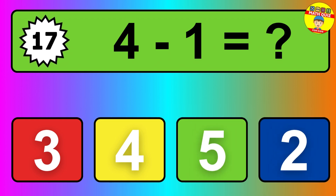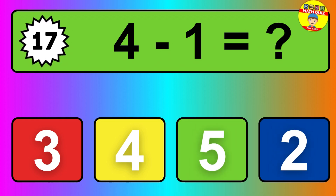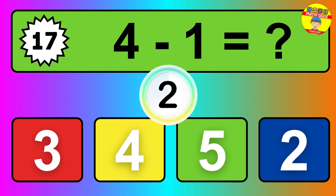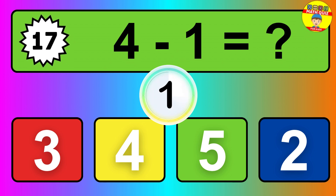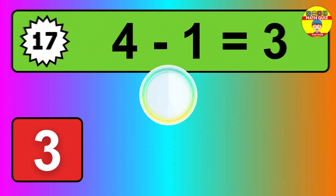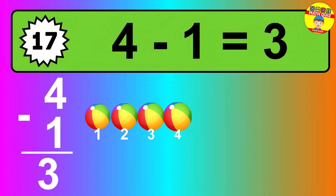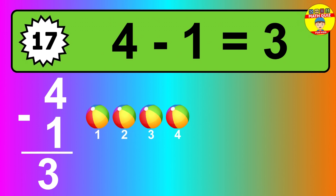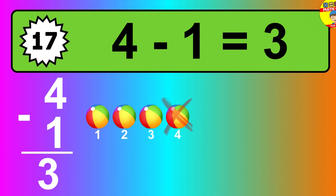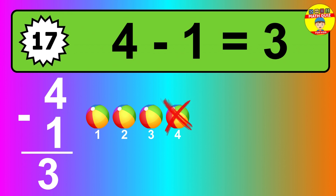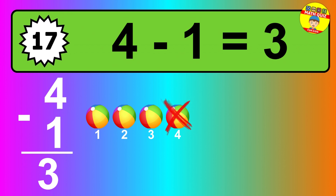Question 17. 4 minus 1 equals what? So the answer is 4 minus 1 is 3. Let's count it. 1, 2, 3.